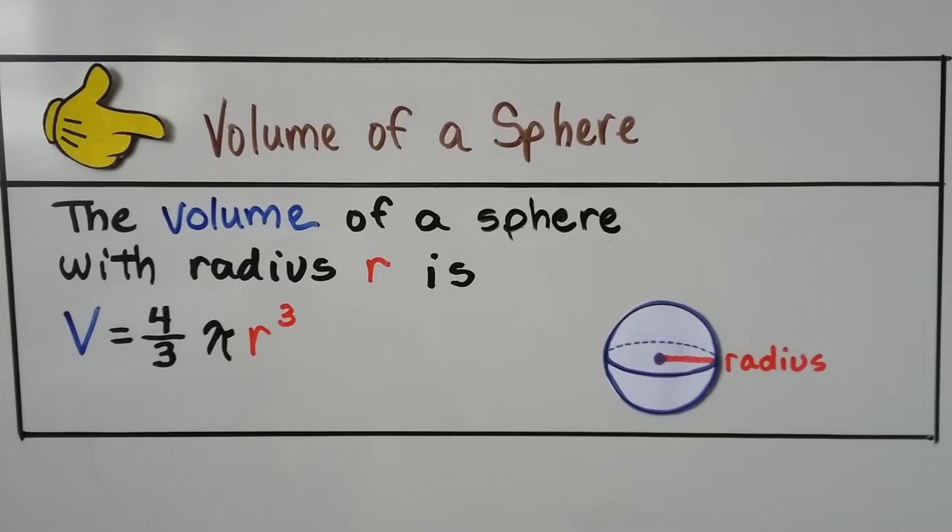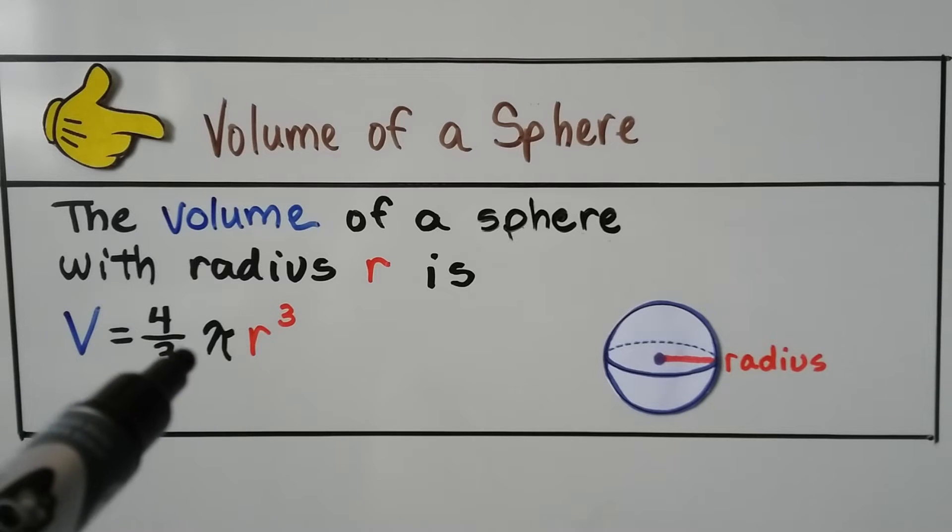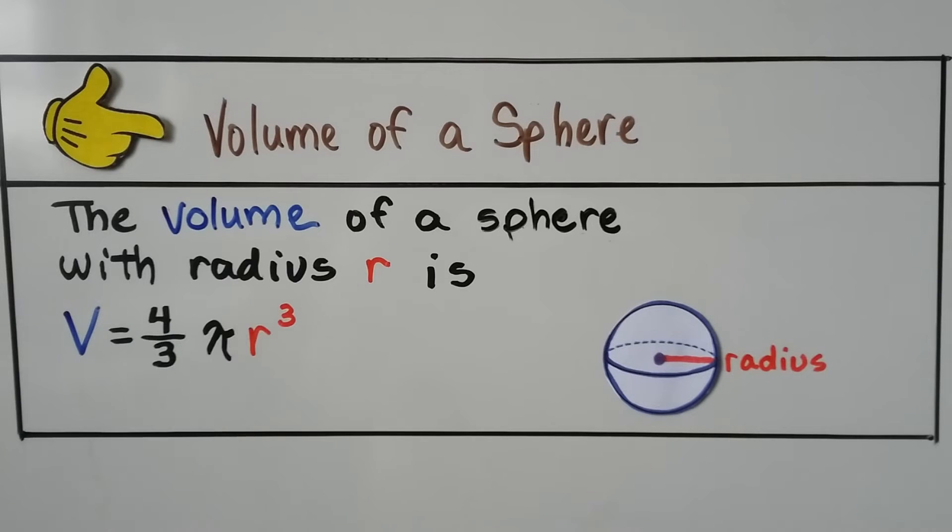So for your notes, this is for the volume of a sphere. The volume of a sphere with radius r is v equals 4 thirds times pi times the radius cubed.